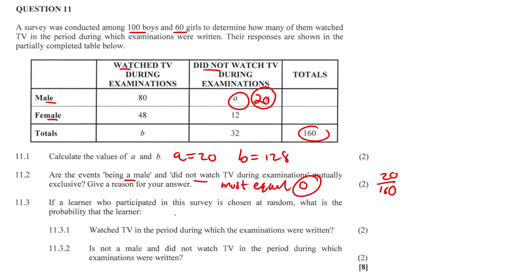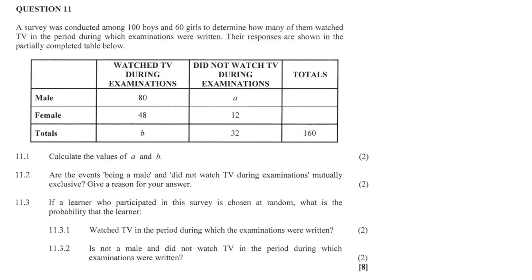11.3: if a learner who participated in this survey is chosen at random, what is the probability that the learner watched TV in the period during which examinations were written? The probability is quite high because 128 learners out of 160 have been watching. So that's literally four over five, or in other words 0.8 or 80%. You can list it however you want — as a simplified fraction, a decimal or percentage, all three will be accepted.